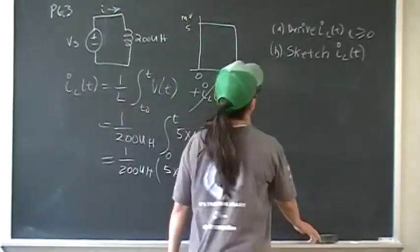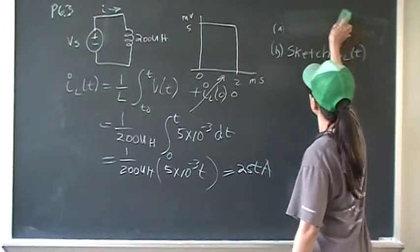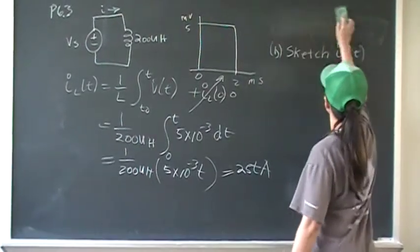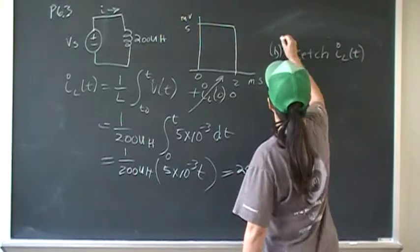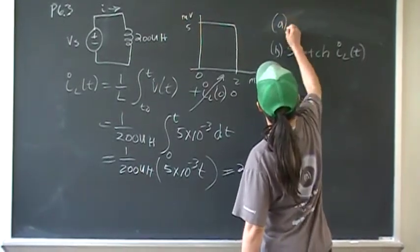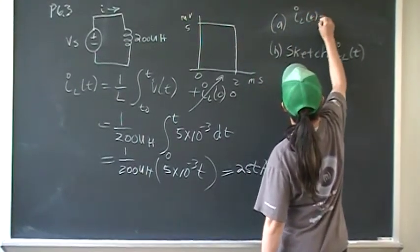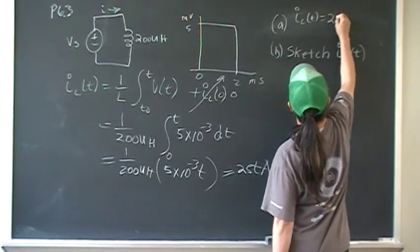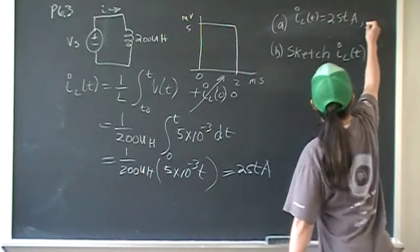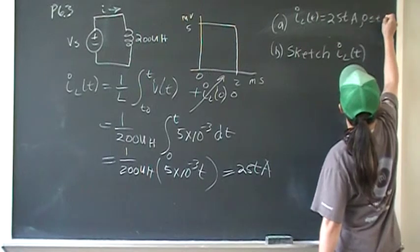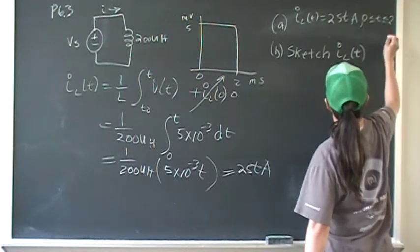So you end up with 25T amps. That's the first part of the general equation for current: IL(T) = 25T amps, for T from 0 to 2 milliseconds.